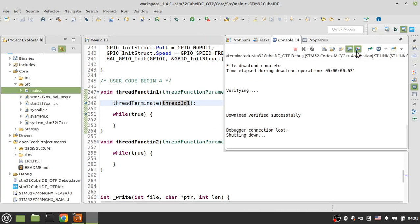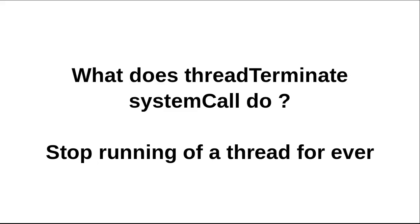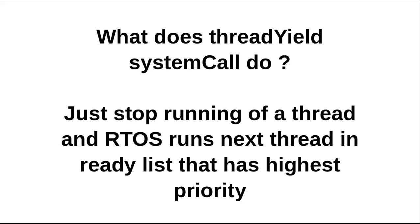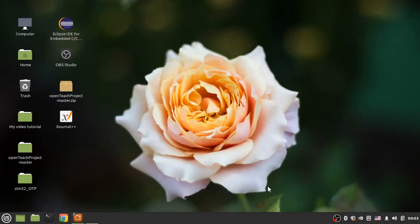Now let's see another system call: thread yield. What does the thread yield system call do? It just stops the running of the current thread, and after calling thread yield, ARTOS runs the next thread in the ready list that has the highest priority. Let's see an example to describe this.